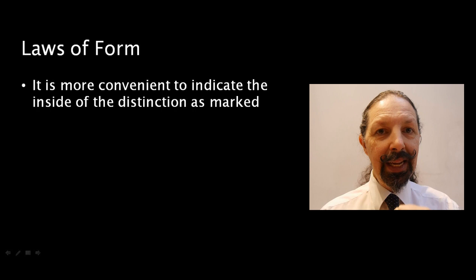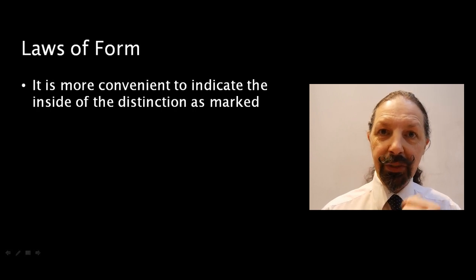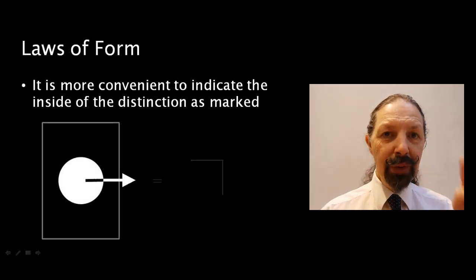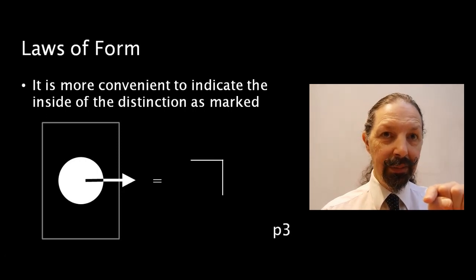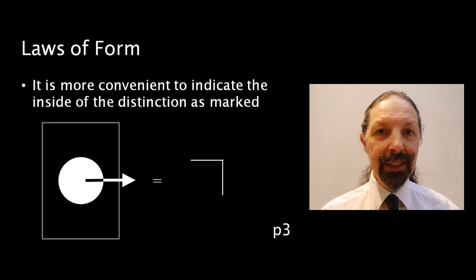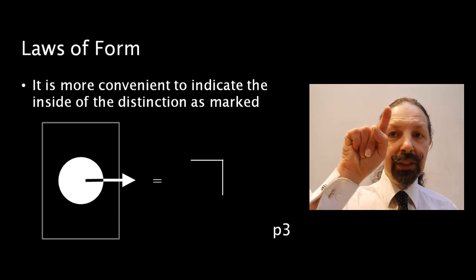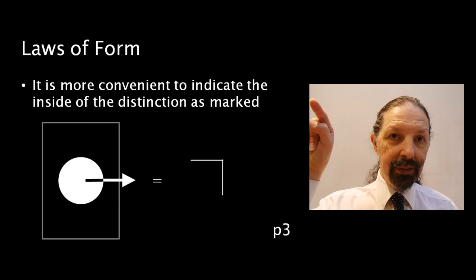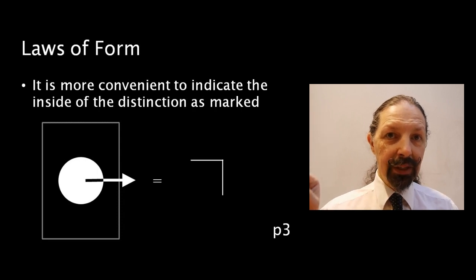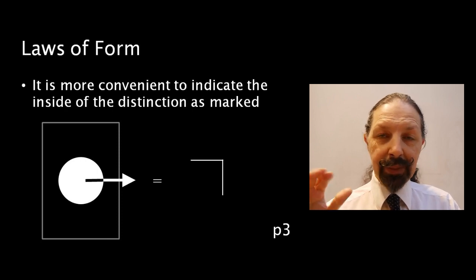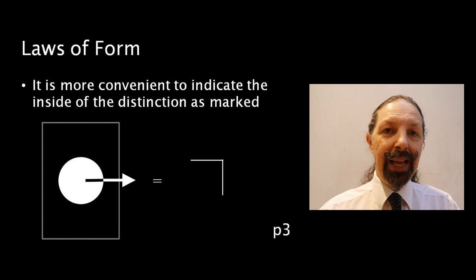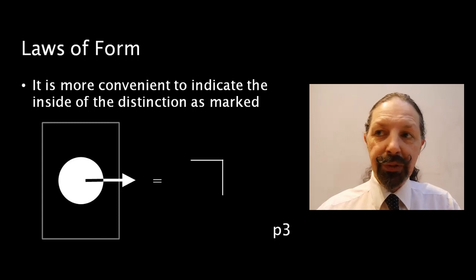It's more convenient to indicate the inside of the distinction as being marked, which is why when we want to say that we're pointing at the inside of the distinction, it's easier to use the symbolic form Spencer Brown comes up with and that is called a mark. It is a horizontal line from left to right that then goes down for an equal distance on the right-hand side. It's sometimes called a cross because it invokes the act of crossing. He uses both terms in the work.